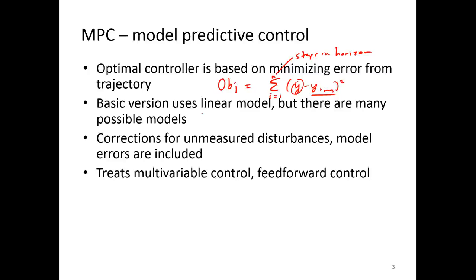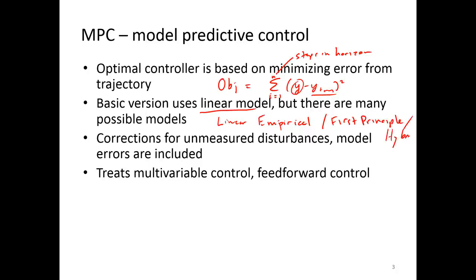The beginning applications of MPC had linear models, but there are many different types of models. These can be linear, empirical, or they can be first principles — which are generally nonlinear. Or it can be a combination of the two, and those would be something like hybrid models.